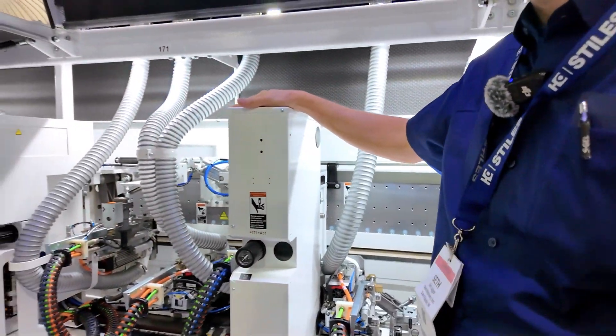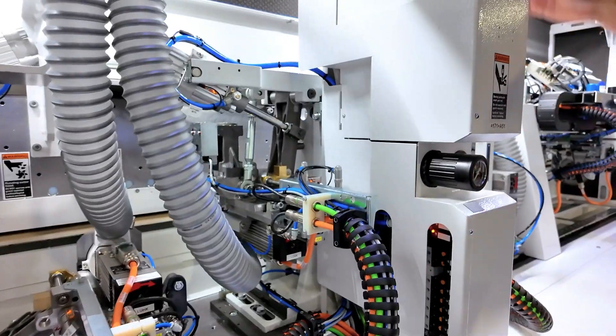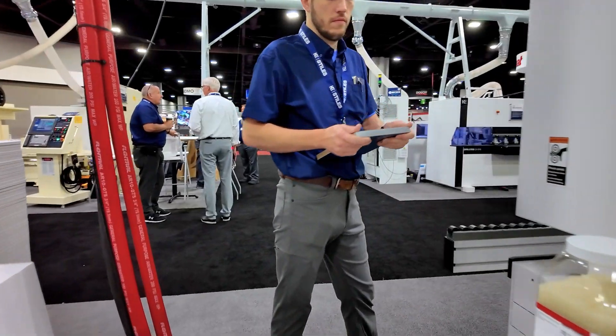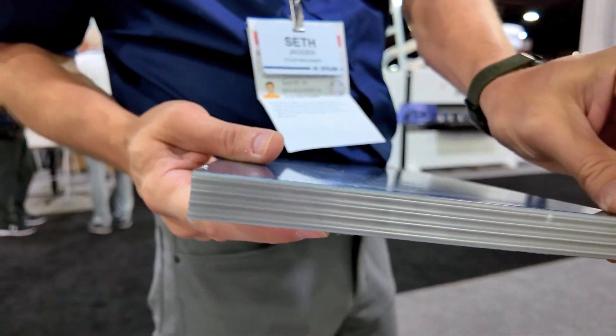And then one of our nicest corner rounders, this is the FF32 four-motor corner rounder. So this unit is going to have two functions, one to trim the top and bottom of the board, and also round the edges of the board.